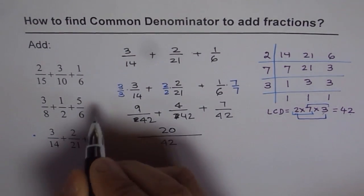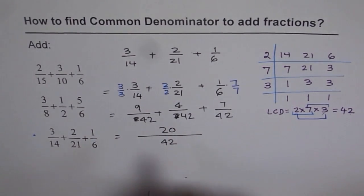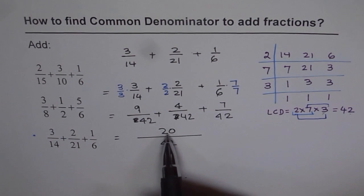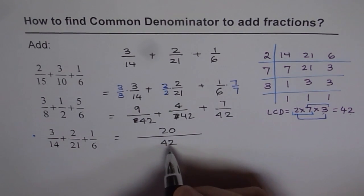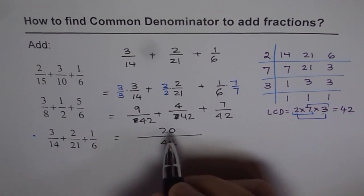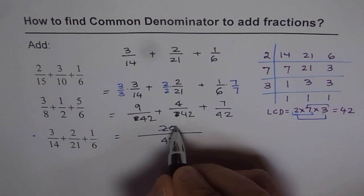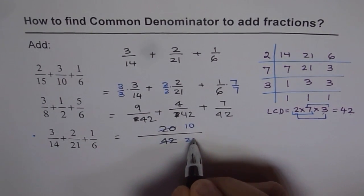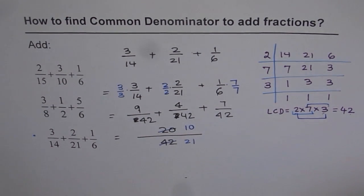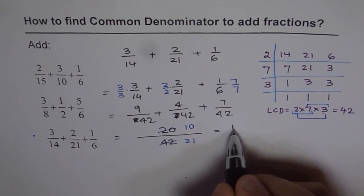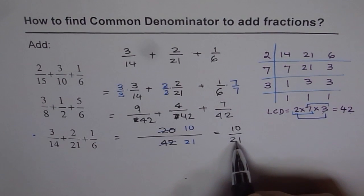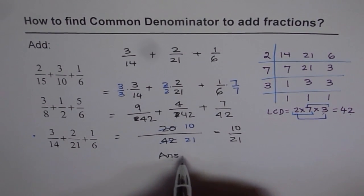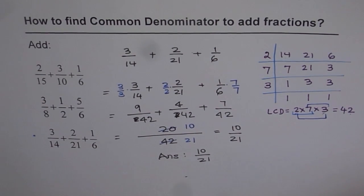We get 20 over 42. These are all equivalent fractions, so we write an equals sign. Now 20 and 42 are both even numbers, so we can simplify by dividing both by 2. 20 divided by 2 is 10, and 42 divided by 2 is 21. So we get 10 over 21. That's our answer — 10 over 21 — and it cannot be simplified any further.